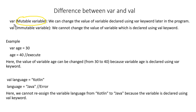Whereas the val keyword gives us an immutable variable. Immutable means it cannot be changed, so we cannot change the value of a variable declared using the val keyword. If we create a variable using val, we will not be able to change its value at a later stage. For example, if we create val name h equals Kotlin and later want to change it to Java, that would not be possible.